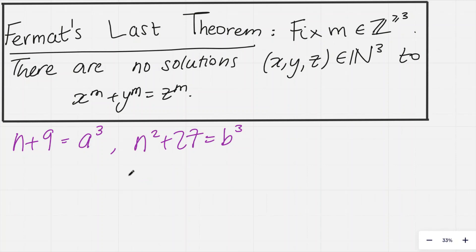Now what I'm going to do is just multiply these two numbers together. If I do that, I get a cubed, b cubed, which is obviously the same thing as a b cubed.